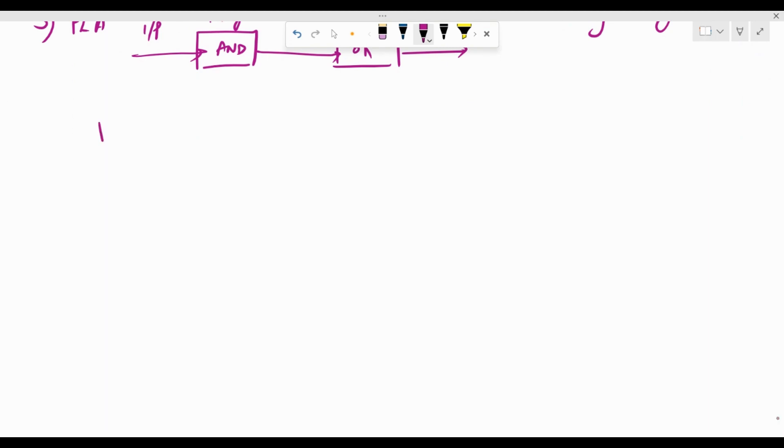For example if I have F1 is AB dash plus AC plus A dash BC dash and F2 is given as AC plus BC the whole dash. Say these are the two boolean functions which we need to implement and we've been asked to do it using the PLA.